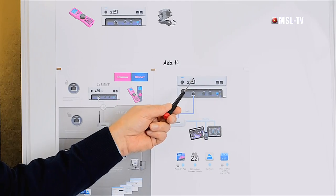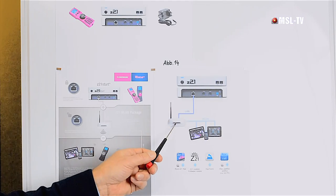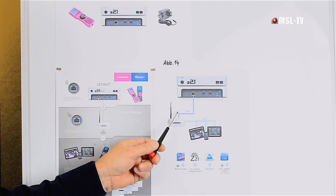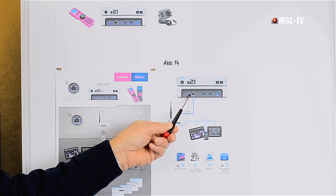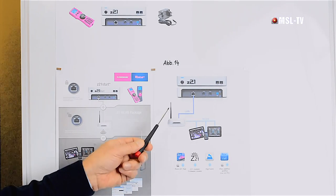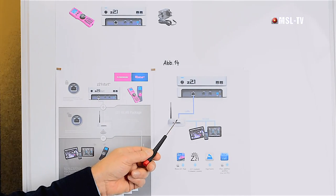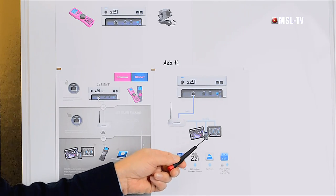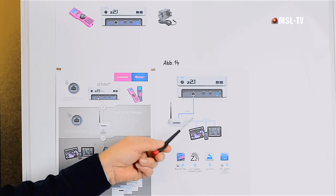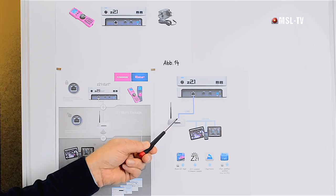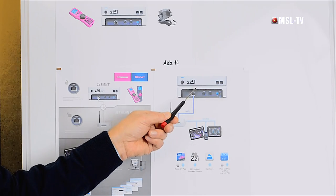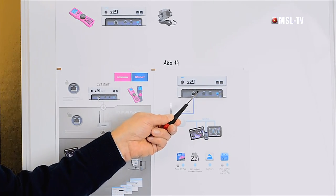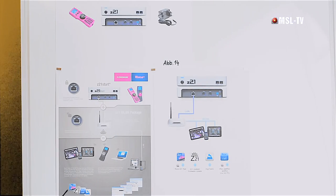Die Z21 von vorne, von hinten. Der WLAN-Router wird über ein LAN-Kabel in den LAN-Eingang der Z21 gesteckt. Und somit können wir mit Tablet-PCs und Smartphones über WLAN an den WLAN-Router und somit an die Z21. Das werden wir uns nun anschauen.